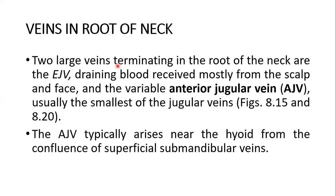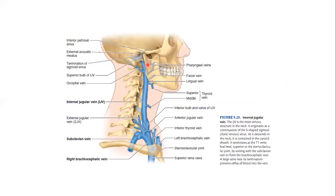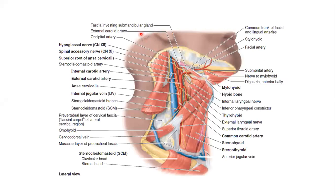In my lecture on parotid gland anatomy, I showed you the external jugular vein and how it is formed by the retromandibular vein, which was formed in the substance of the parotid gland. The retromandibular vein divides into an anterior vein and a posterior vein emerging at the lower angle of the parotid gland, and their union with other veins forms the external jugular vein. This drainage comes from the scalp, covering the supra-orbital area going to the superior nuchal line, the scissor area up to the zygomatic arch, and also the temporal region.